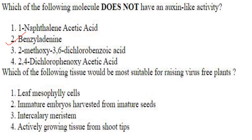Which of the following tissues would be most suitable for raising virus-free plants? Leaf mesophyll cells — no. Immature embryos harvested from immature seeds — no. Intercalary meristem — no. Actively growing tissue from shoot tips — yes, that will be most suitable for raising virus-free plants. A similar question was asked in 2023 also.